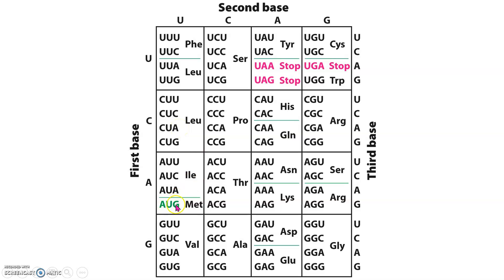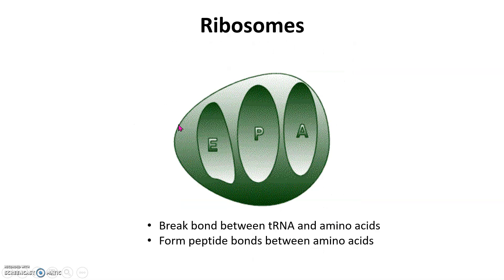So if we relax the third position, chances are the tRNA still carries the correct amino acid. The wobble refers to that third base pair, and if you look at synonymous codons, they usually vary in the third base. Now another important RNA molecule is rRNA, which makes up our ribosome. The ribosome's job is to break the bond between the tRNA and its amino acid — the charging — and form peptide bonds between amino acids. This is like the stage where translation occurs.